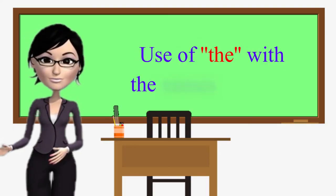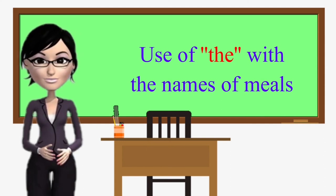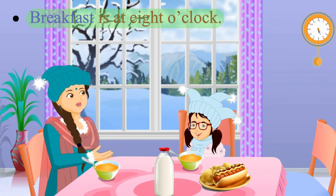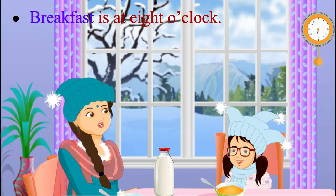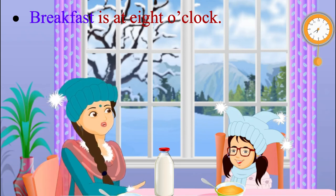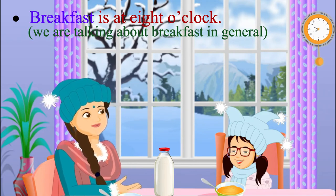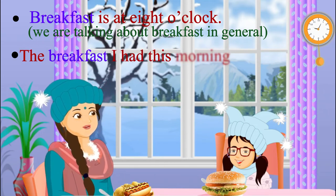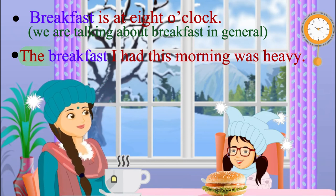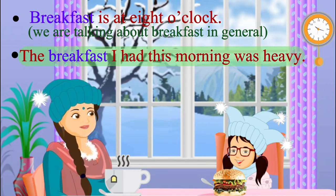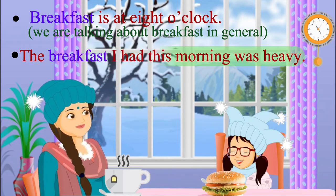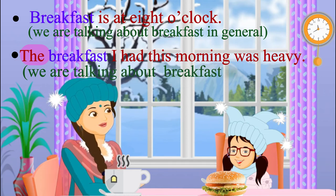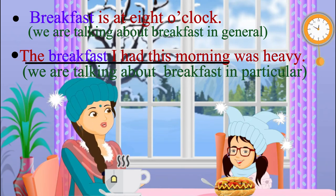Use of 'the' with the names of meals. We do not use any article when talking about breakfast in general. Now consider: 'The breakfast I had this morning was heavy.' In this sentence, we use 'the' because we are talking about breakfast in particular — the breakfast I had this morning.